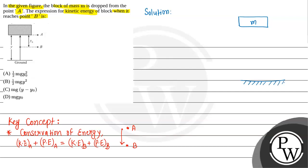Let us take this point as point A as given in the question. After some time, the block is at this point and this point is B.